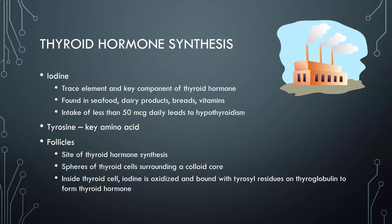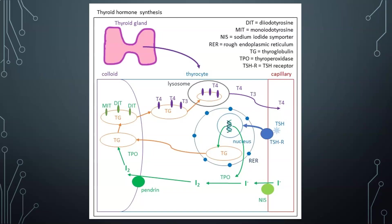Tyrosine is a key amino acid needed to build thyroid hormones. The follicles are the site of synthesis of thyroid hormones within the thyroid gland. There are many thyroid follicles — these are spheres of thyroid cells that surround a colloid core, with the colloid core in the middle and thyroid cells all around it. Inside the thyroid cell, iodine is oxidized and bound with thyrosyl residues on thyroglobulin to form thyroid hormone.